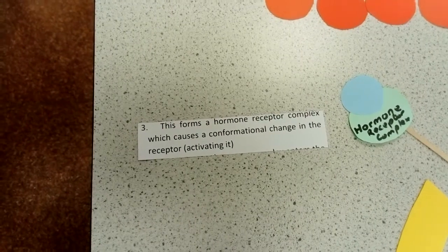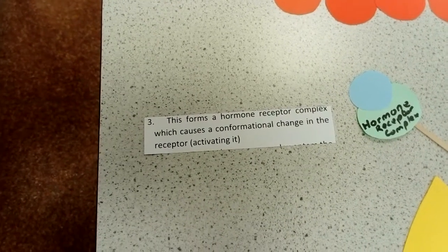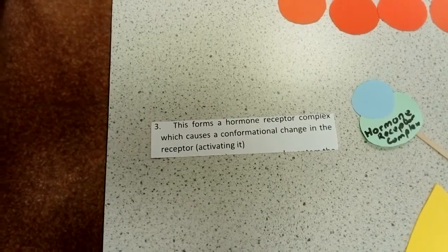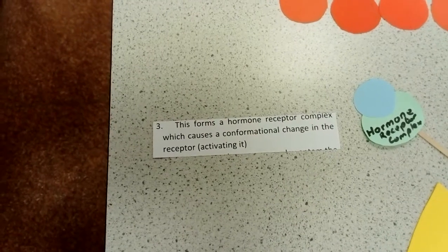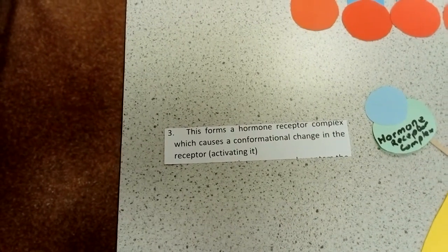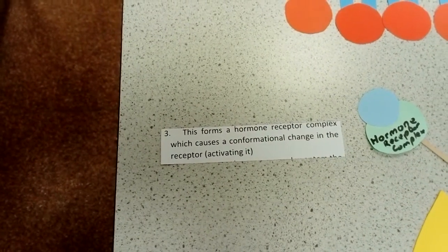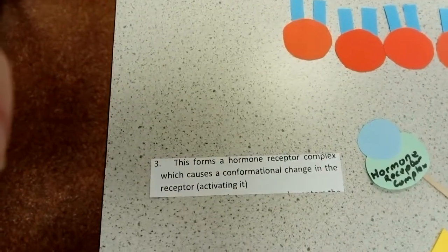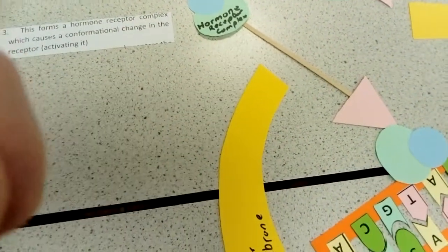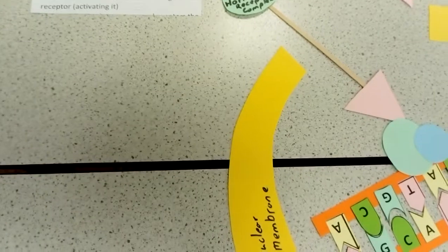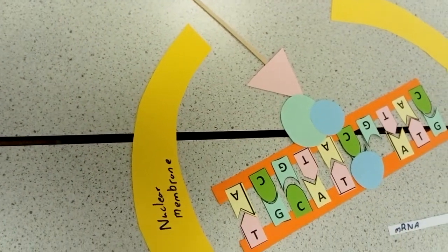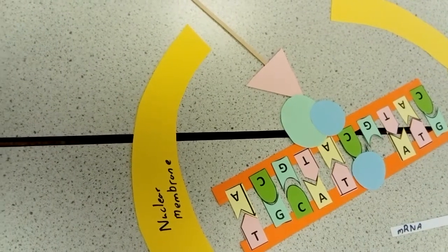The fact that the hormone is bound onto the receptor causes a conformational change in the receptor, thereby activating whatever function it may have. That hormone-receptor complex will then move into the nucleus — through the nuclear membrane, through the nuclear pores — and bind to a specific region on the DNA.